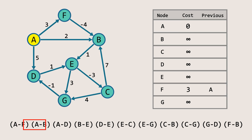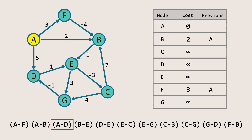Next, for the edge AB, the cost of node A is zero and the edge weight is two. Combining both, we get a total of two, which is less than the current cost of node B. So we update the cost of node B to two, and set node A as the previous node for node B. Similarly, the cost to reach node D is five, which is less than the current cost, so we update the cost of node D to five and set node A as the previous node for node D.